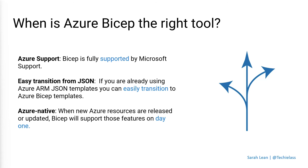Azure Bicep is the right tool if you're looking for something fully supported by Microsoft. If you're in the Azure space and had an issue with a Bicep template or deployment, you can log a ticket with Microsoft support and they can help you. The team have also worked hard to ensure that any new Azure products or features are supported by Bicep from day one — rather than waiting for it to filter through into a third-party tool. You have that Azure-native support built into Azure Bicep from the start.